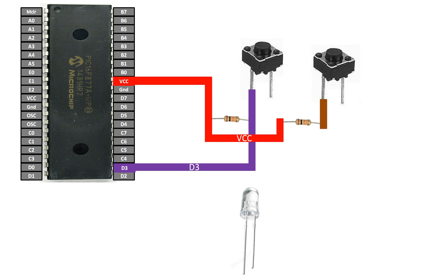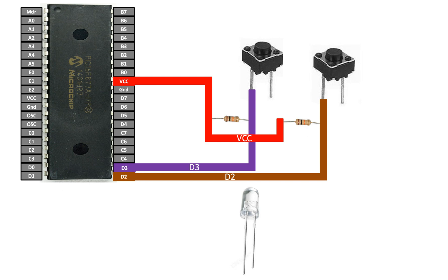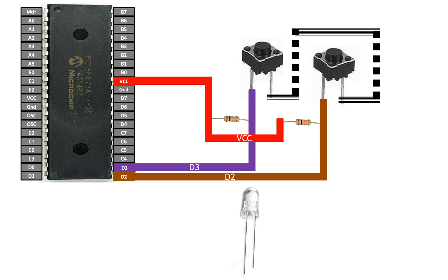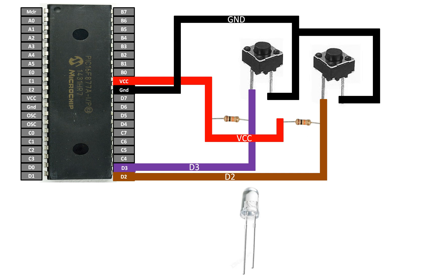For the other resistor do the same: connect one pin of the push button with the other end of the resistor, then send it to any available digital I/O pin. I'm using D2 to lower the brightness and D3 to increase the brightness — so the left button increases brightness and the right decreases it. The second pin of both buttons is empty; connect them together and send to common ground. Our buttons are now connected to the PIC 16F877A.